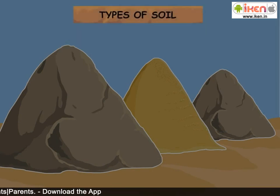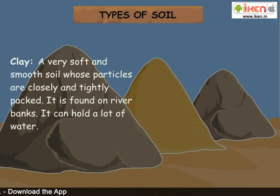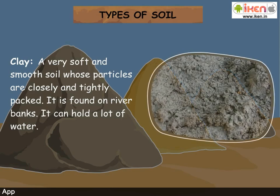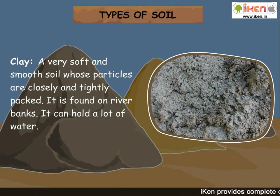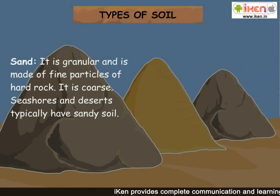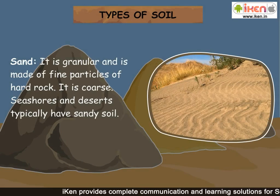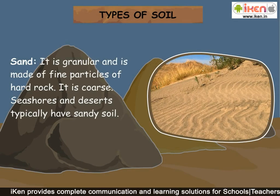Types of soil: Clay is a very soft and smooth soil whose particles are closely and tightly packed. It is found on river banks. It can hold a lot of water.